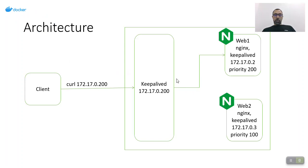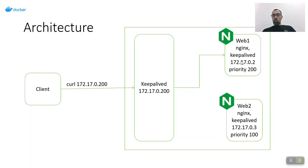I created a scenario with two containers — I named them web1 and web2. I installed nginx and keepalived in both of them. In keepalived configuration there is something called priority; this priority will be higher in web1 compared to web2 — for example, priority 200 for web1 and 100 for web2.